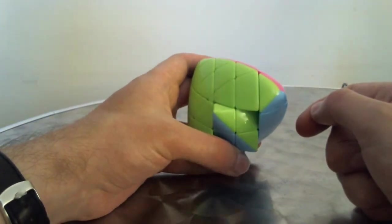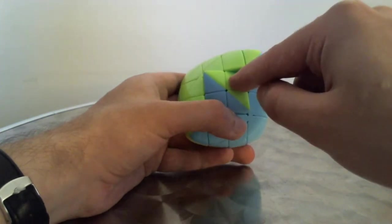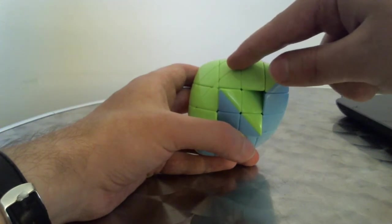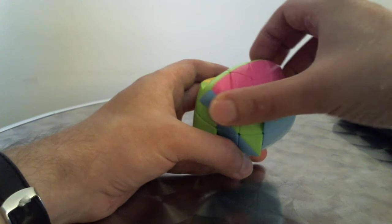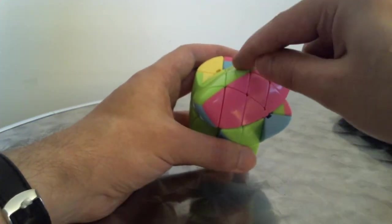Now as we noted before, we want to get this green piece swapped with this one. So what we do first, we have to rotate the top face to get this green center piece into proper position.